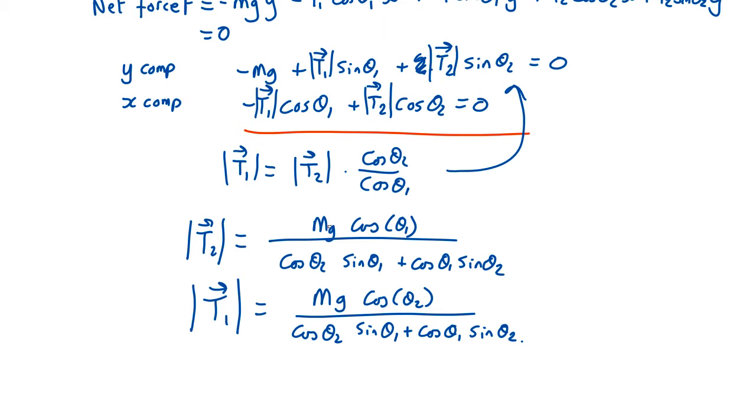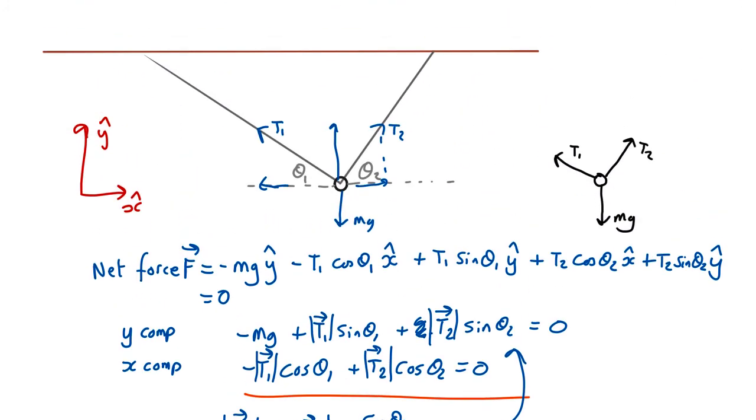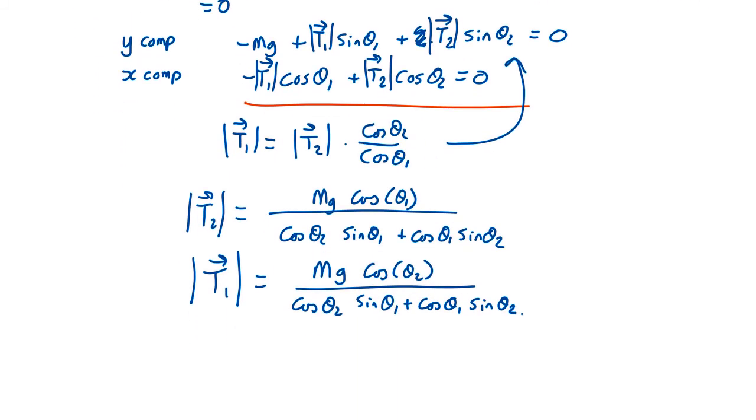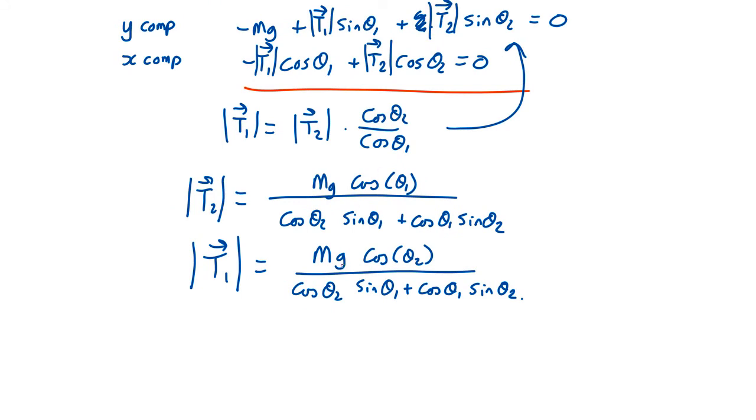We can check function plausibility. If the mass is zero, the tensions are both zero, so that makes sense. We can also look at the angles. Let's say that theta 1 was 90 degrees and theta 2 was zero. That means it would be hanging straight from cable 1. Then cos of zero means tension 2 goes to zero. And tension 1 is just going to be mg. So that all works. So this looks plausible.